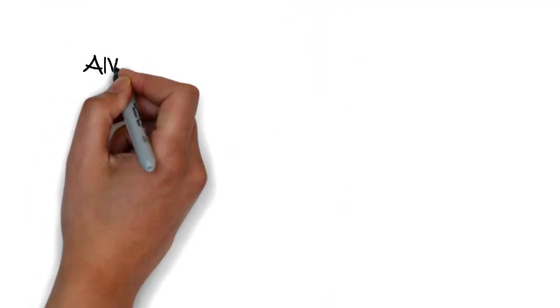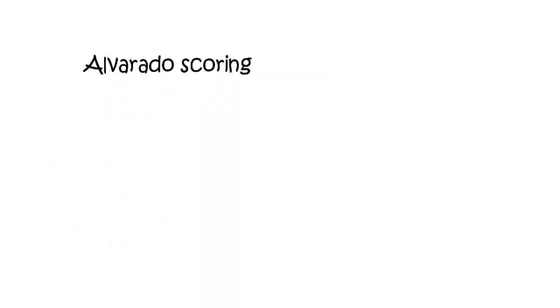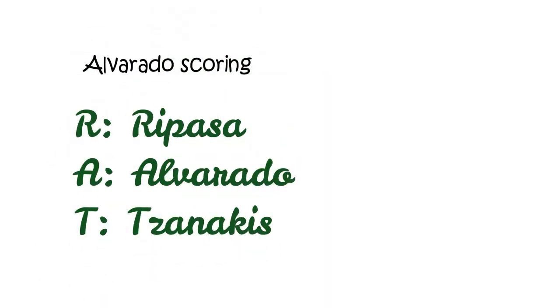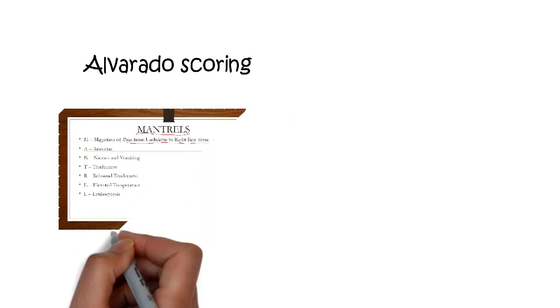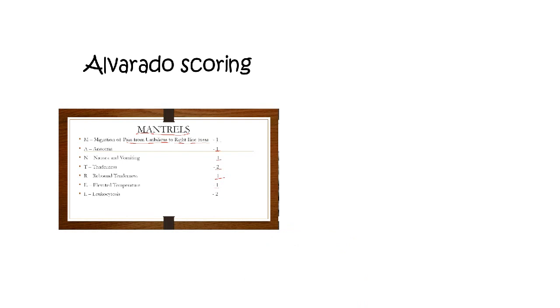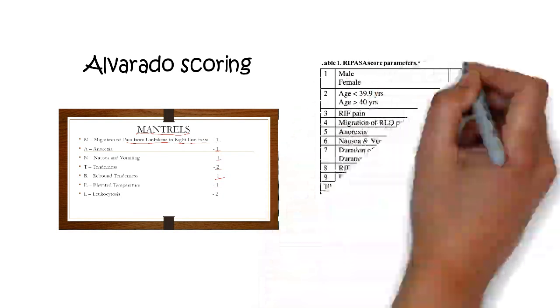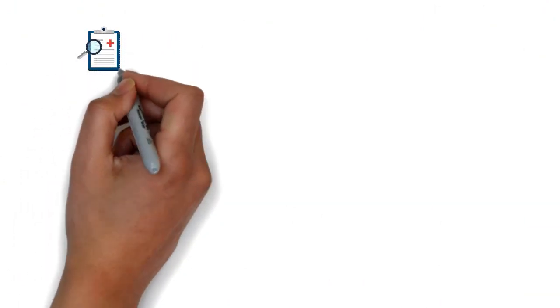Various scoring systems for appendicitis can be remembered by the mnemonic RAT: R for Ripasa scoring, A for Alvarado scoring, and T for Tzanakis scoring. The Alvarado scoring system is most commonly used and can be recalled with the mnemonic MANTRELS. There are also other scoring systems important in the diagnosis of appendicitis.